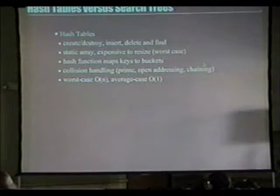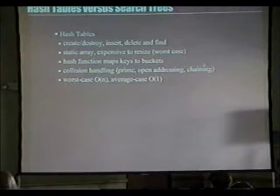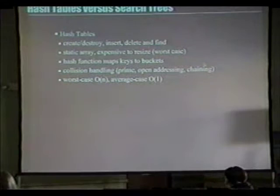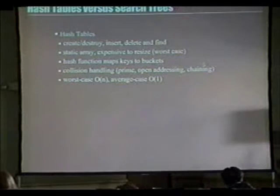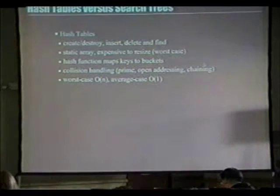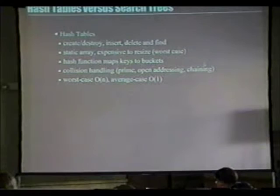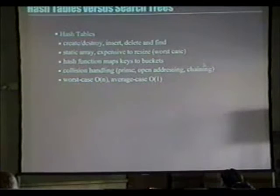Speed is important but not at the expense of security. Hash tables versus search trees: hash tables can create, destroy, insert, delete, and find. We have a static array — it's expensive to resize. Our worst case is big O of log N, average case is big O of one if we don't have collisions. We do collision handling by giving a prime hash table size with open addressing and chaining. This is better if you're doing symbol tables — things where you won't be removing entries, just adding.